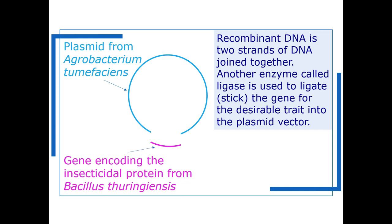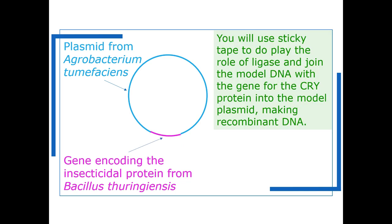To make recombinant DNA you join two strands of DNA together. In the lab another enzyme called ligase is used to ligate or stick the gene for the desirable trait into the plasmid vector. We're going to use sticky tape to play the role of ligase in our modeling exercise here.